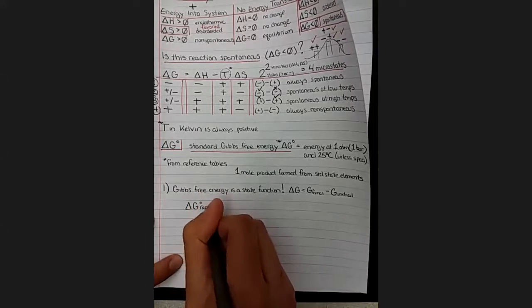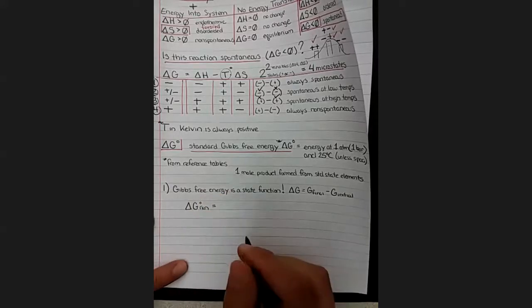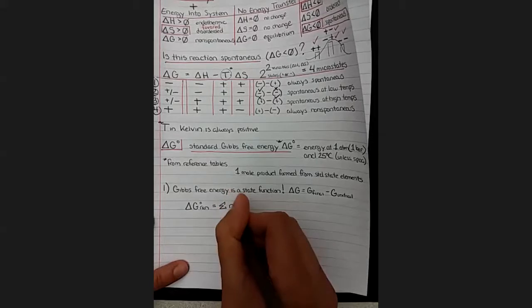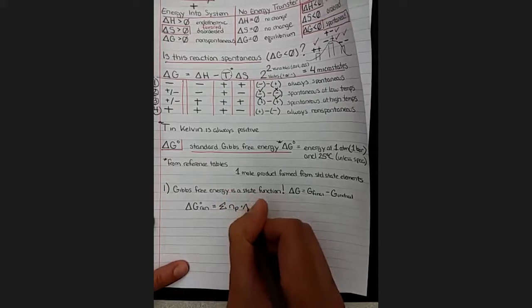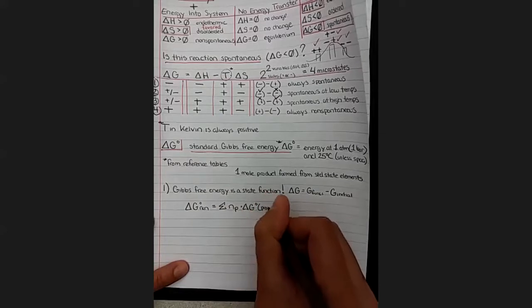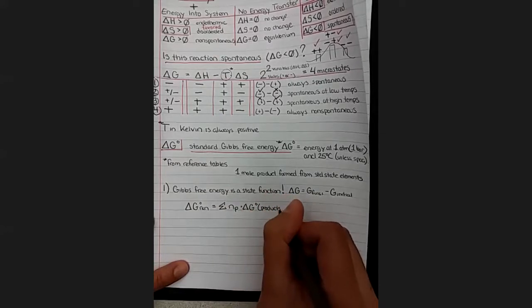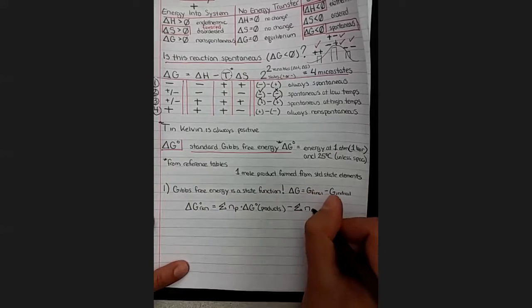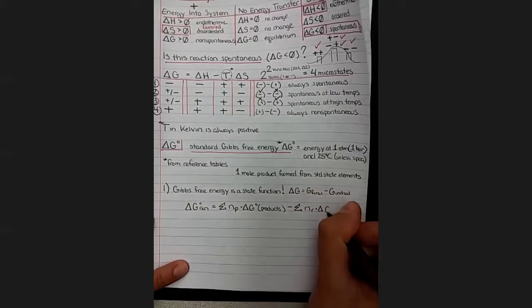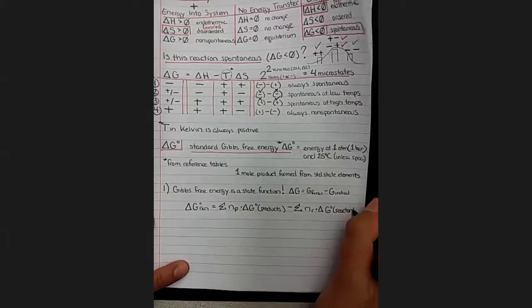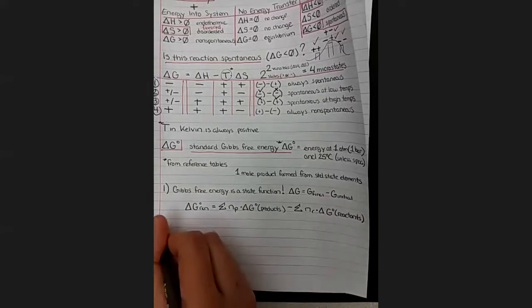So we can solve for the standard change in Gibbs free energy of a reaction as products minus reactants, just as we did for the other variables. We can solve for the standard change in Gibbs free energy as the sum of products minus the sum of reactants. There we are.